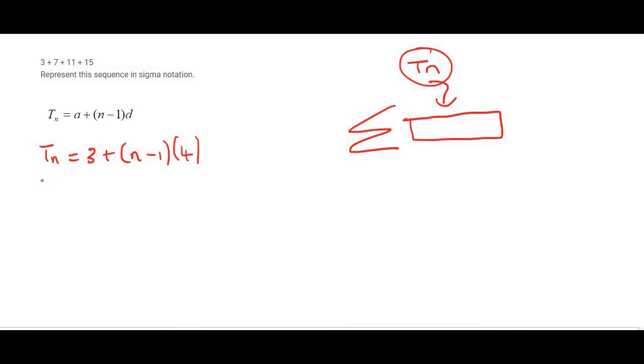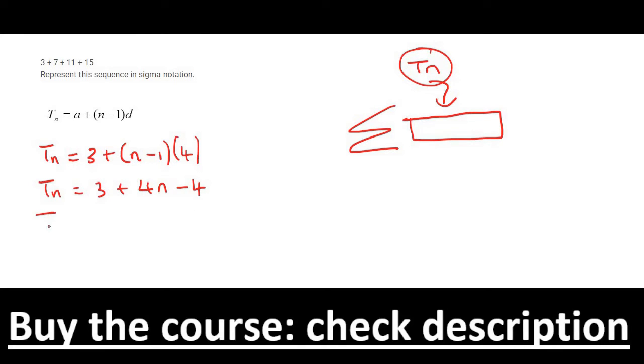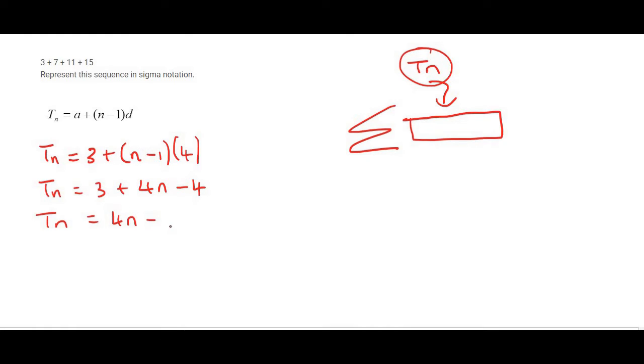Now we can multiply the 4 into the bracket, and so that's going to give us plus 4n minus 4. We then simplify by putting the 3 and the minus 4 together. So that's going to give us 4n minus 1.